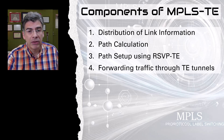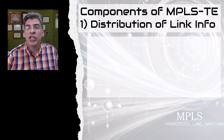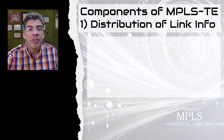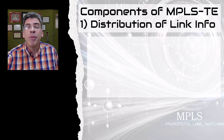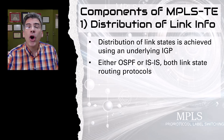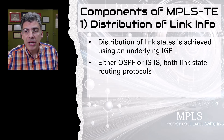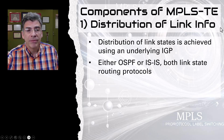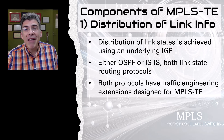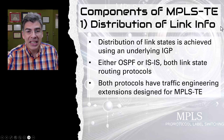The first component has to do with the distribution of link information. In order for MPLS TE to determine the specific path that each LSP should take, there must be a way to distribute information about the states of the various links throughout the topology. This is done using the underlying IGP — specifically, it's performed by either OSPF or ISIS. Both are link state routing protocols and have been developed with traffic engineering extensions specifically designed to support MPLS TE, which advertise link attributes relevant to MPLS TE.